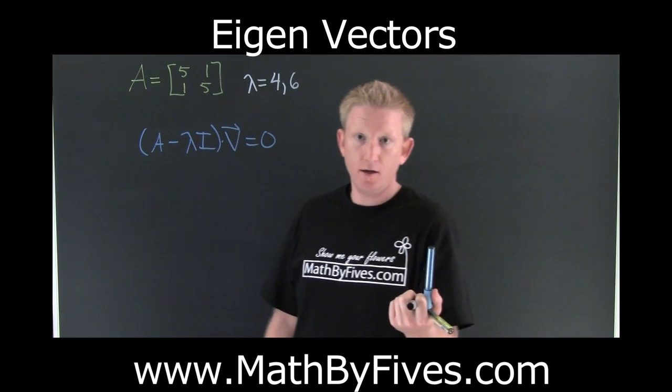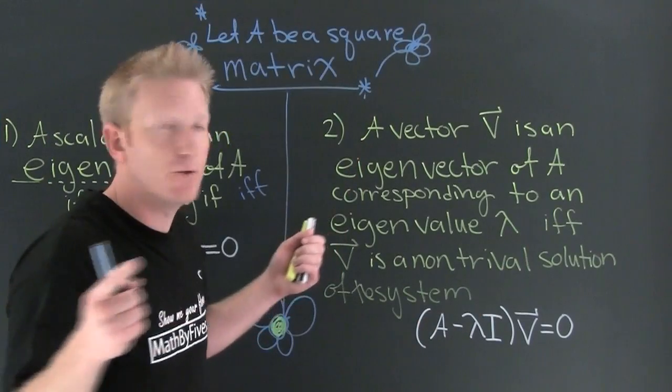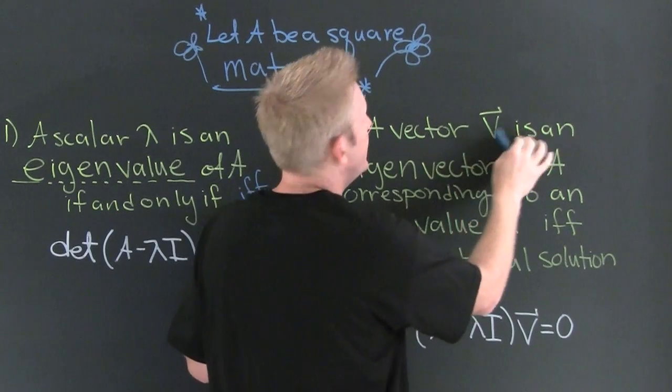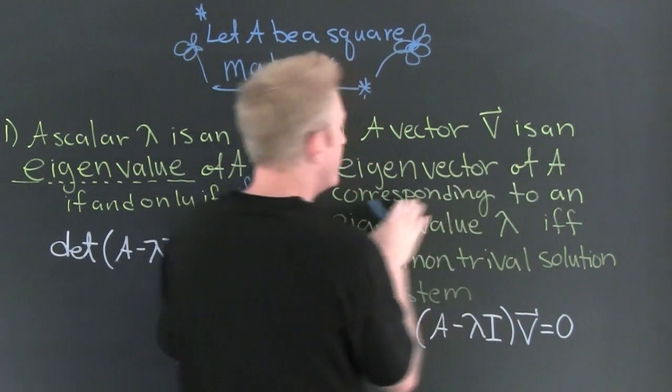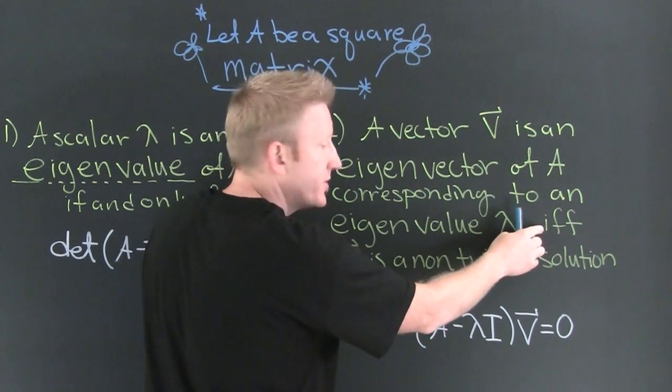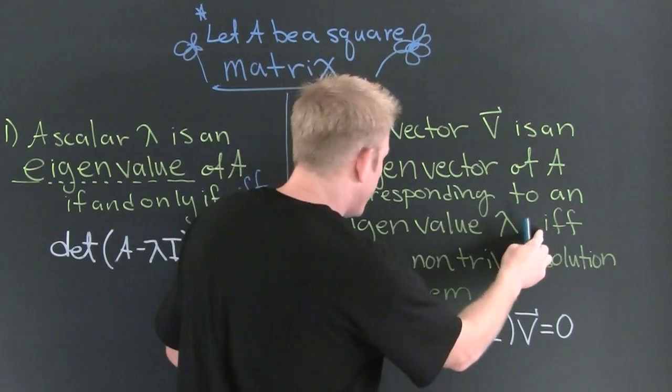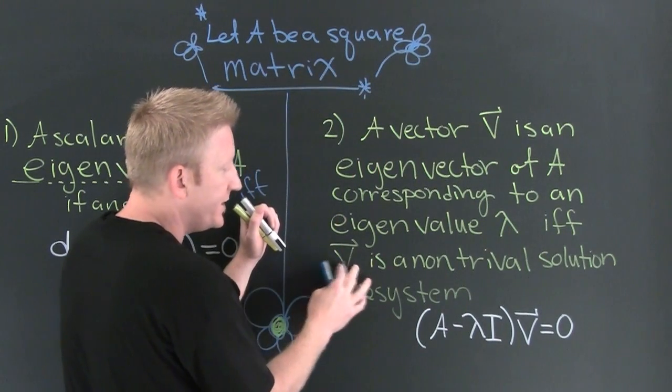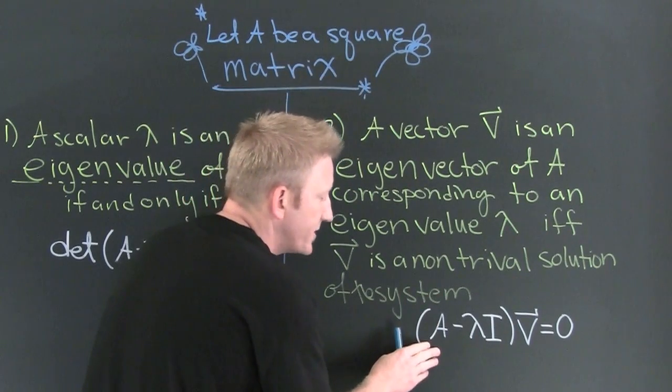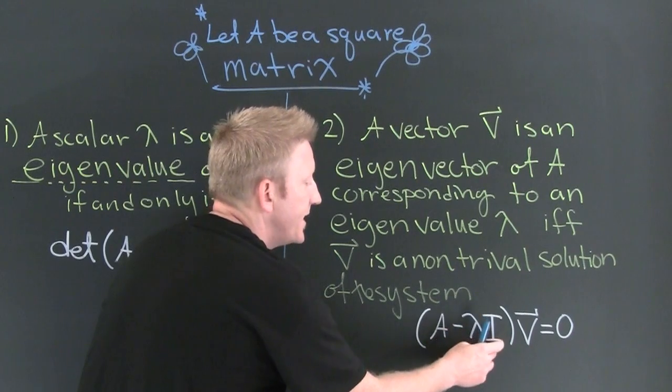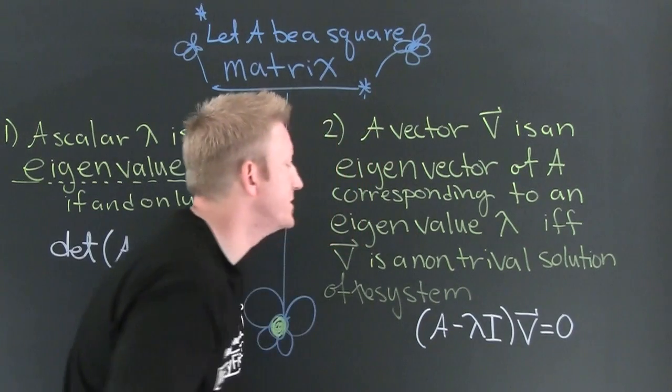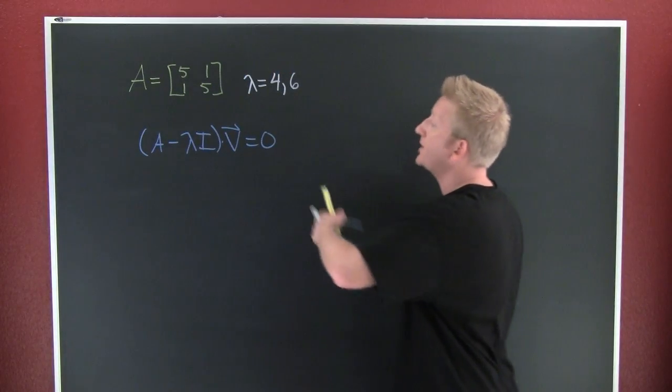So we just found some eigenvalues. Now we want to go through and find our eigenvectors. How do we find eigenvectors? Let A be a square matrix. A vector v is an eigenvector of A corresponding to an eigenvalue of lambda if and only if that vector v is a non-trivial solution to the system: square matrix A minus the scalar lambda times the identity matrix, multiplied by v, is equal to zero.